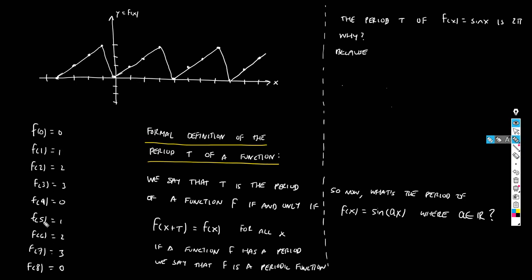Look at this table giving values of the function for specific inputs. For x = 0, output = 0; x = 1, output = 1; x = 2, output = 2; x = 3, output = 3; and for x = 4, we go back to 0. For x = 4 the function returns to 0, and the whole thing starts over again, both to the right and to the left.